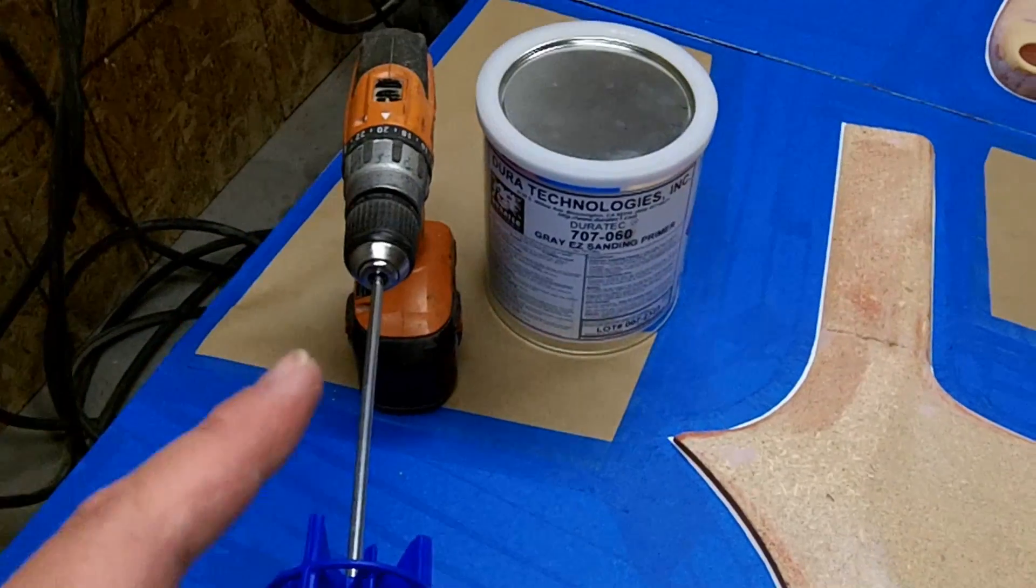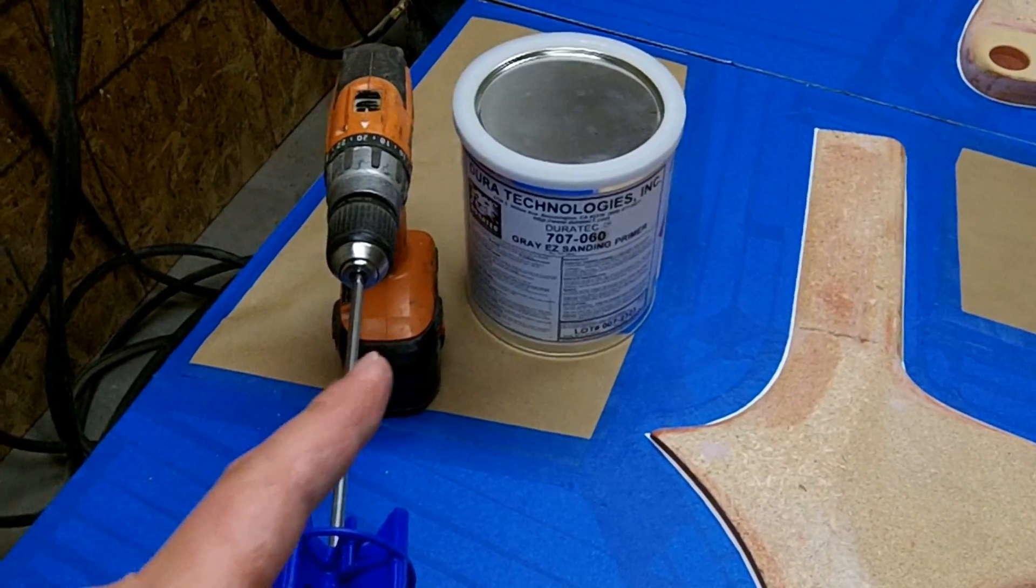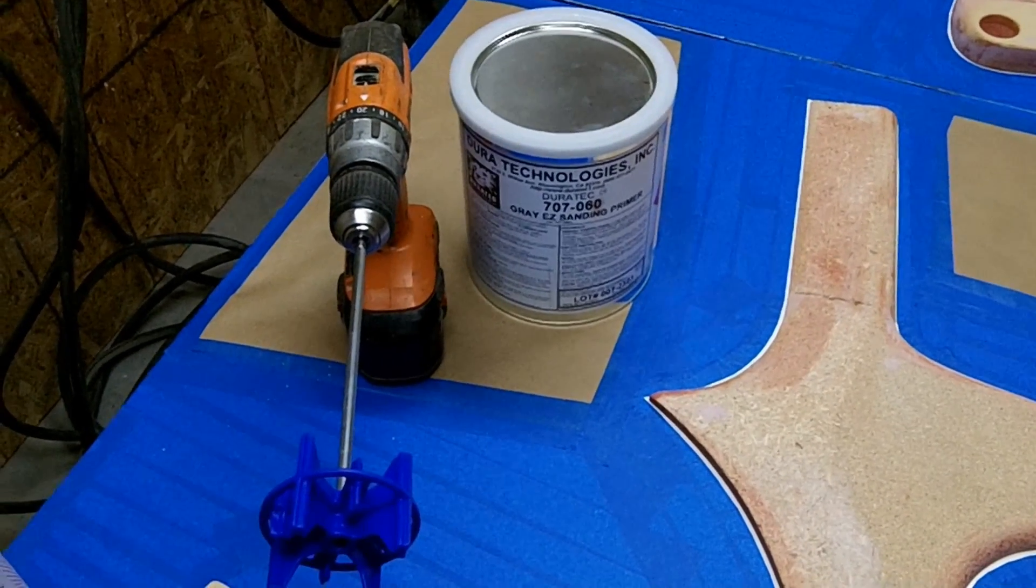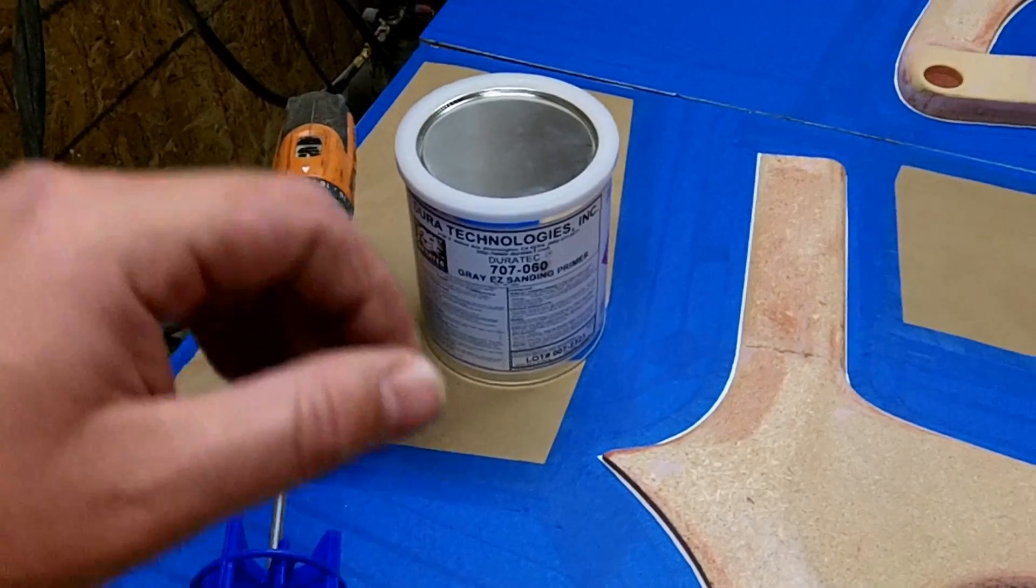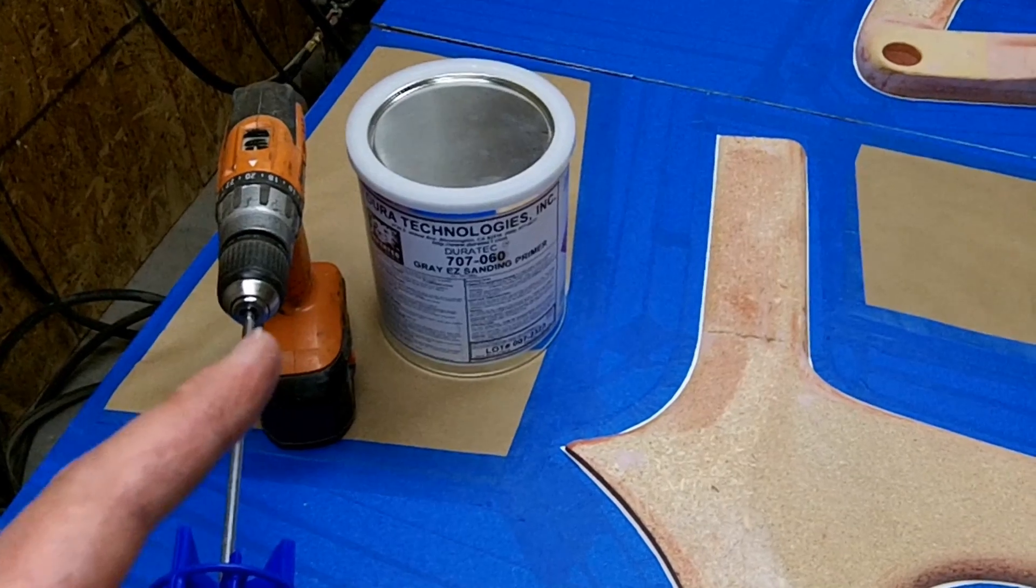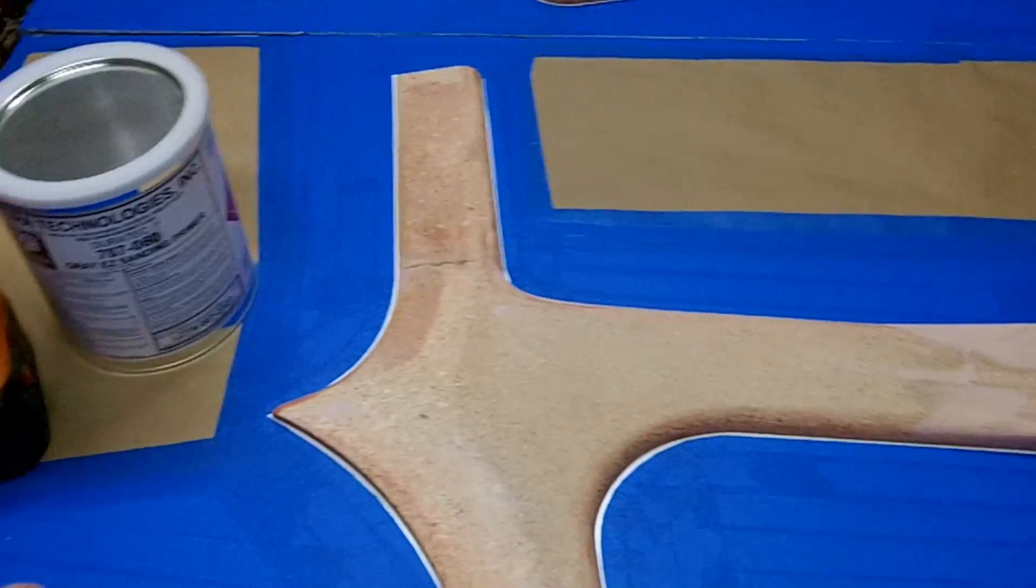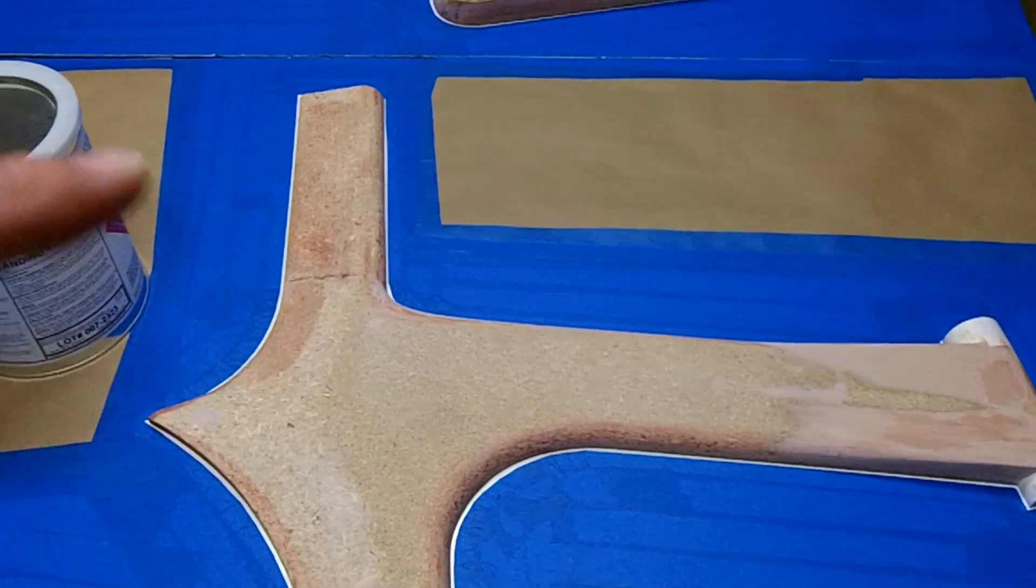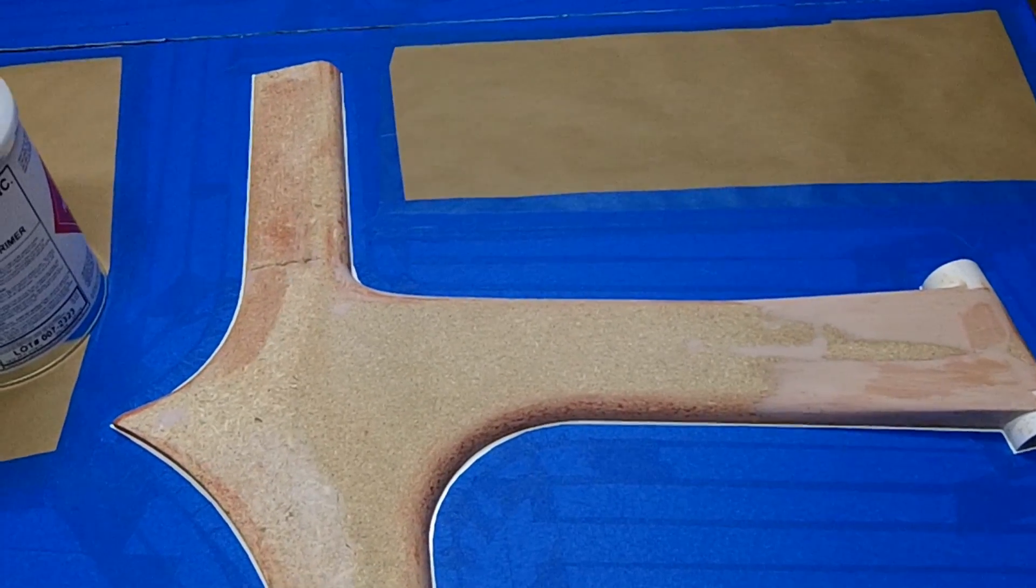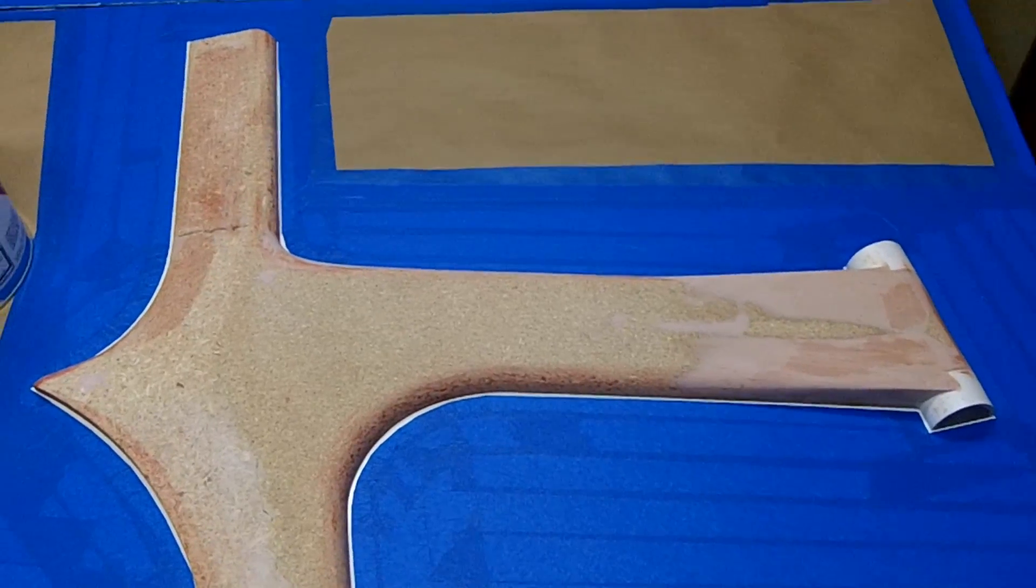What I'm using here is that Duratec. This is the gray easy sanding primer. It's got fillers in it. So we need to mix it up well. I use one of these things just to drill with the mixer on it, paint mixer. This is a polyester paint. So not only does it dry but it also cures. And those fillers in there fill in your pinholes. And it sands really easy. And you can sand it to a nice shiny lustrous gloss. And you're ready to make your female mold parts on top of that.